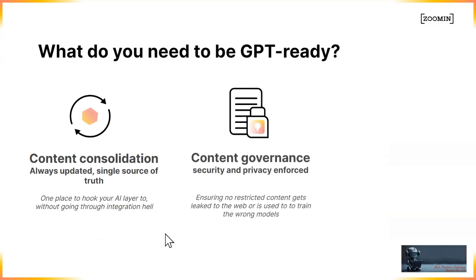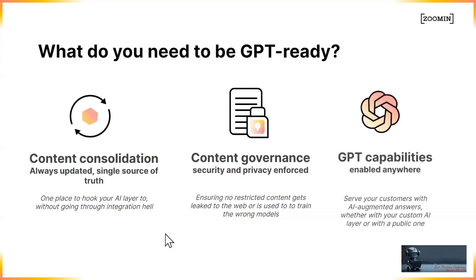The second thing is content governance. The vast majority of companies we work with have some content that is private — maybe a small percentage, maybe a large percentage — and making sure people are not getting AI answers based on content they're not allowed to see is paramount. Third, GPT capabilities should be available pretty much anywhere, once you have a content framework with an AI layer on top.